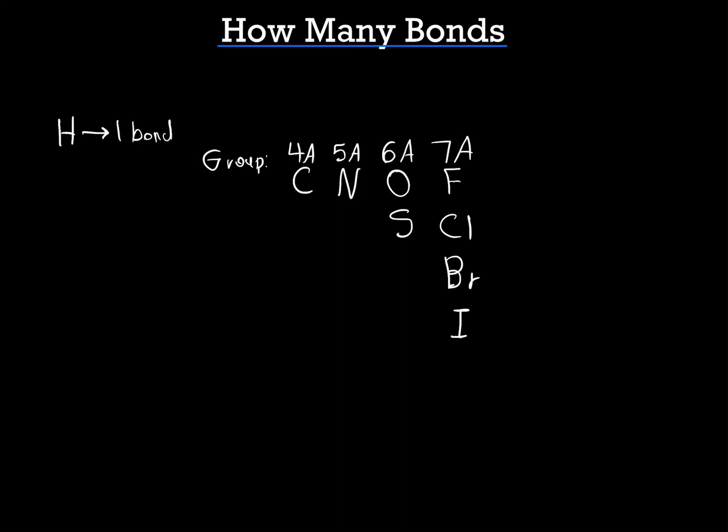The number of valence electrons is the number of electrons that these elements are going to have in their outermost energy level. Carbon has 4, nitrogen has 5, oxygen and sulfur have 6, the halogens have 7. So as you can see, the number of valence electrons corresponds with what group they are on the periodic table. You just take away the A, and you have the number of valence electrons.